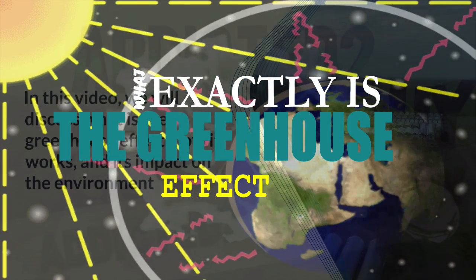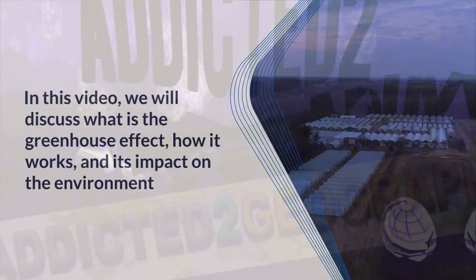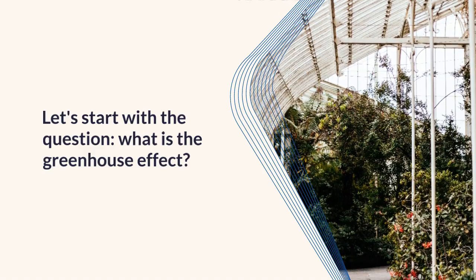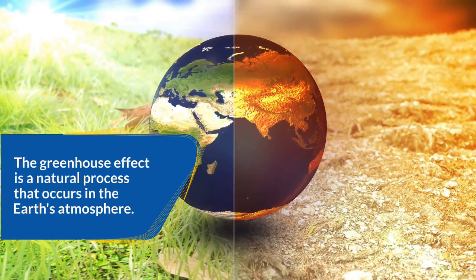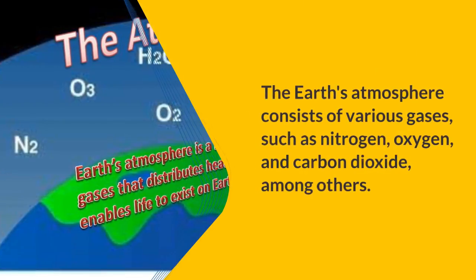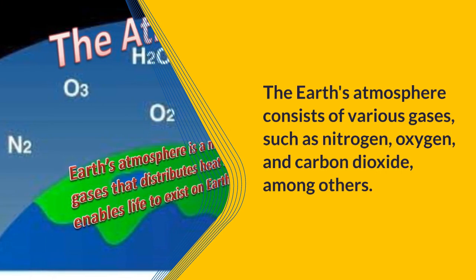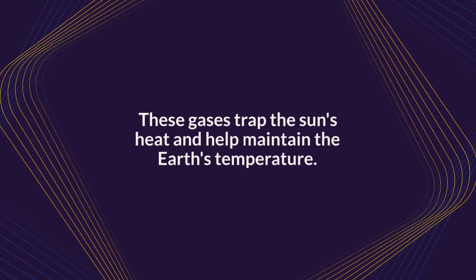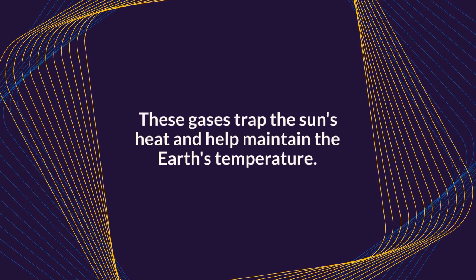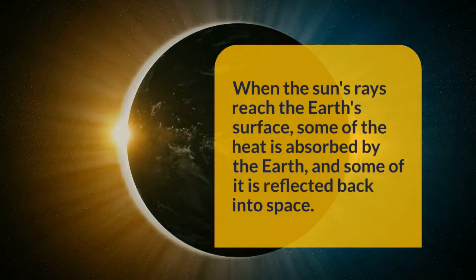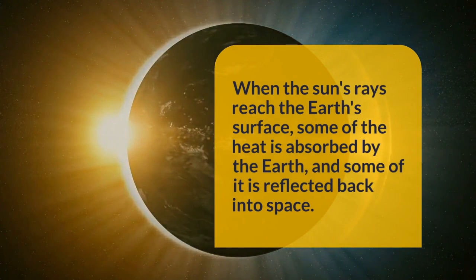Today we'll be looking at what is the greenhouse effect, how it works, and what are the impacts it has on the environment. The greenhouse effect is a natural process that occurs in our Earth's atmosphere. Our Earth's atmosphere consists of various gases — for example oxygen, carbon dioxide, nitrogen — and these gases help to trap the sun's heat and help to maintain the Earth's temperature.